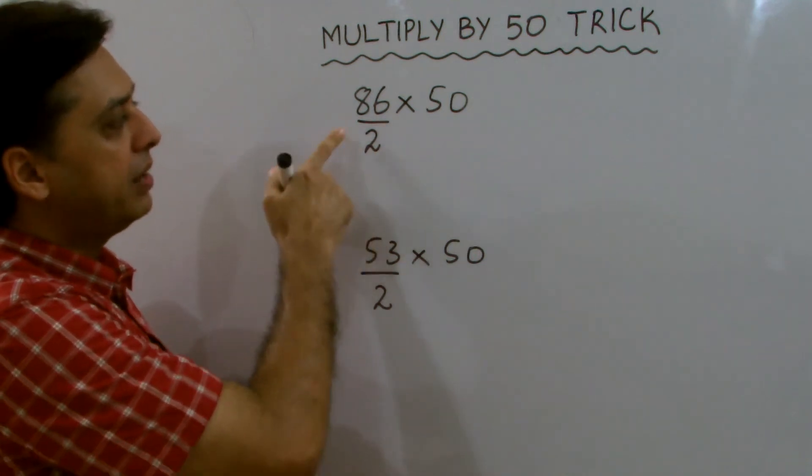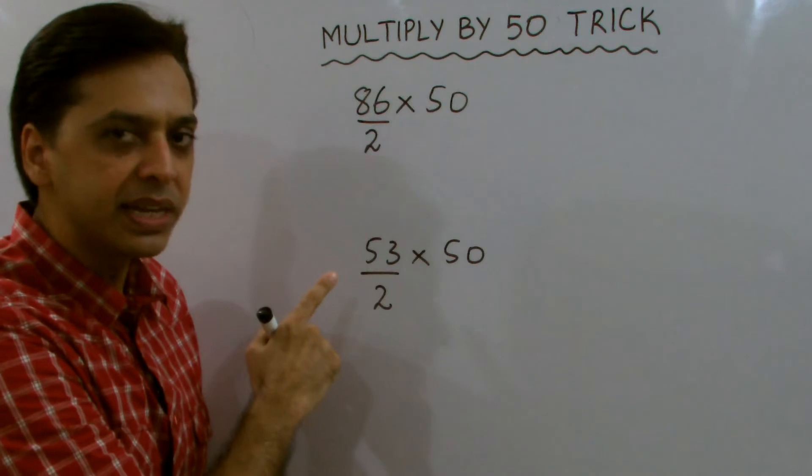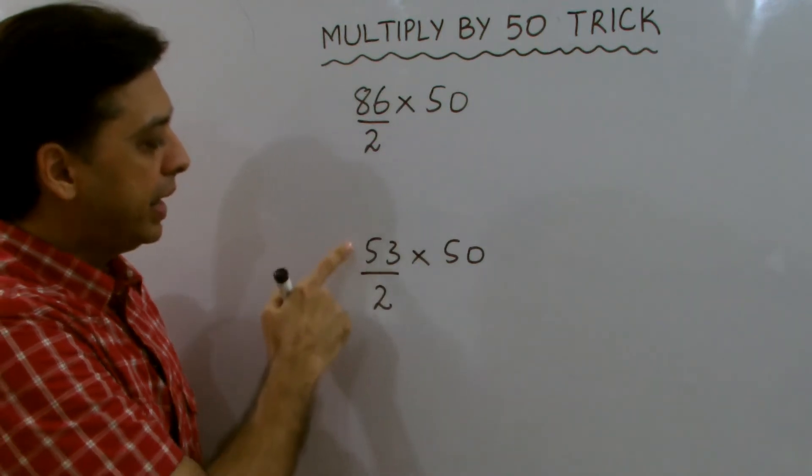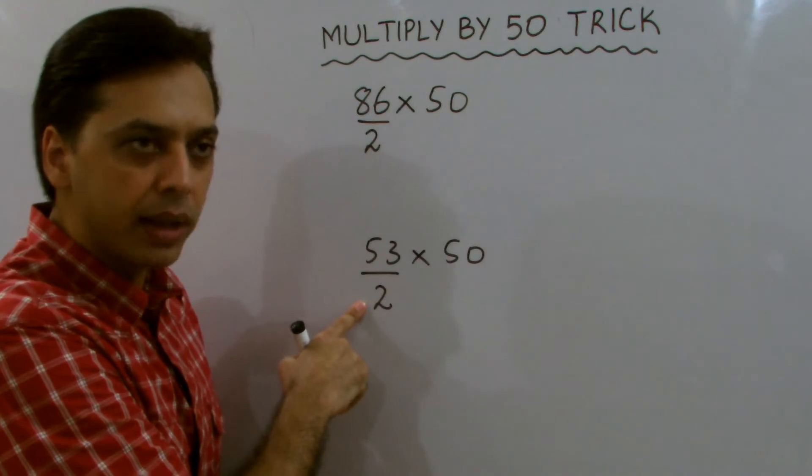When you divide an even number by 2, you get remainder 0. When you divide an odd number by 2, you get remainder 1.